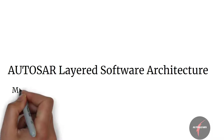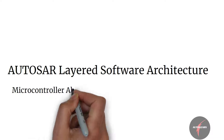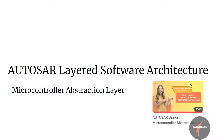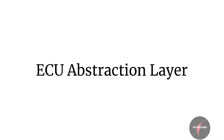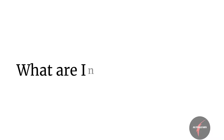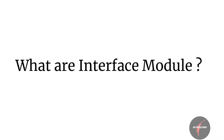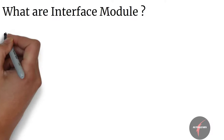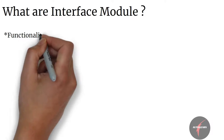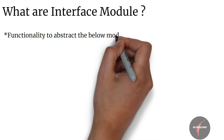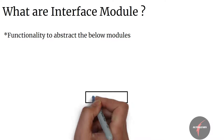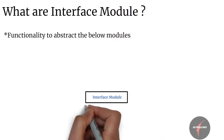After getting an understanding on the microcontroller abstraction layer, let's now look into the ECU abstraction layer of the layered software architecture. But before we dive in, let's first understand what interface modules are. An interface module is a software module which contains the functionality to abstract from the architecturally placed modules below them.